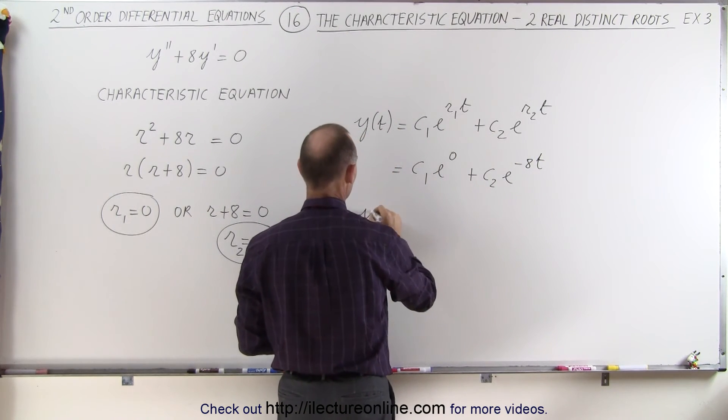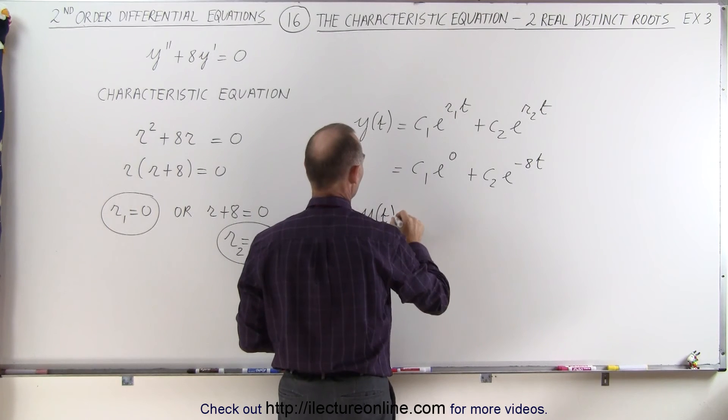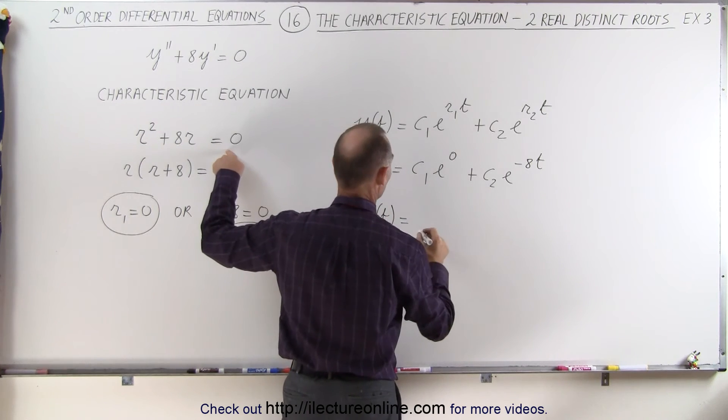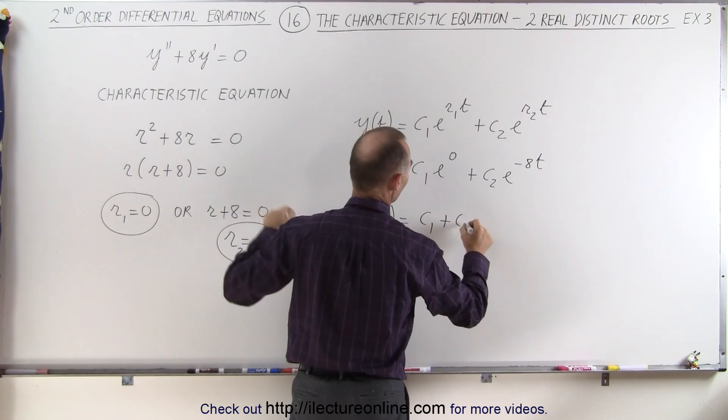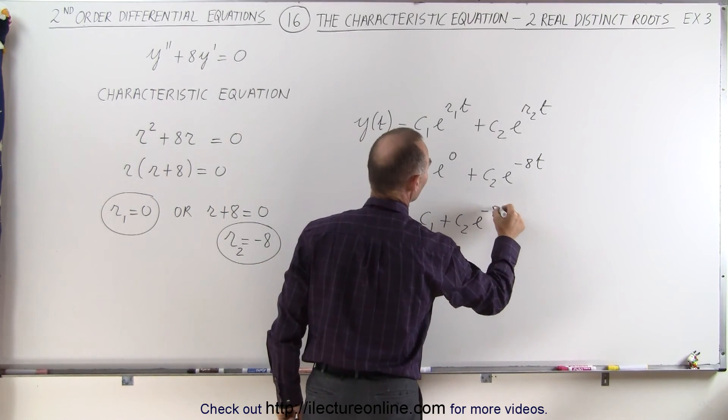Now, e to the zero is simply one, so you could say that the general solution obtained from using this characteristic equation is c1 plus c2 e to the minus 8t.